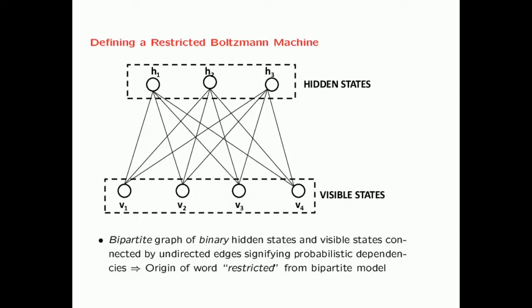In a restricted Boltzmann machine, we have two types of states: hidden states and visible states. The hidden states and the visible states form a bipartite graph among them. In a general Boltzmann machine, edges are allowed between all states. However, in a restricted Boltzmann machine—the word 'restricted' refers to the fact that edges are only allowed between the hidden states and the visible states. These edges define the correlations between the hidden and visible states.